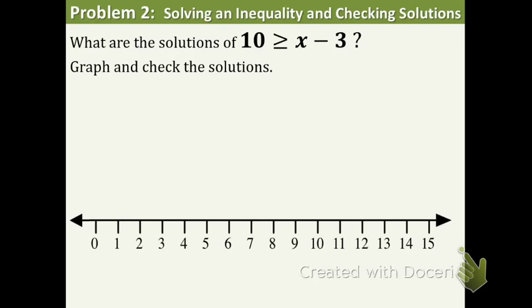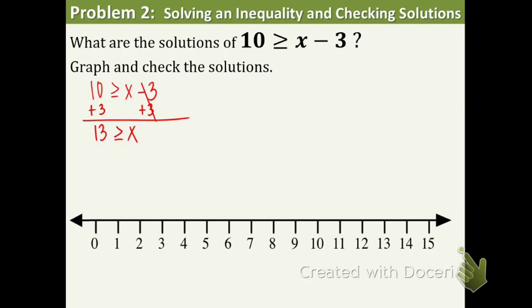We're going to use the addition property again, but this time I'll also show you how to check your answers. We add 3 to both sides to get the x by itself, and we get 13 on the left. Remember the shortcut: the variable has to be on the left side. So we rewrite this as x is less than or equal to 13 — it's the exact same thing as 13 greater than or equal to x, just written a different way. Now put a closed circle on the 13 because of the or-equal-to line underneath, and we're shading towards the left because those are the numbers less than 13.